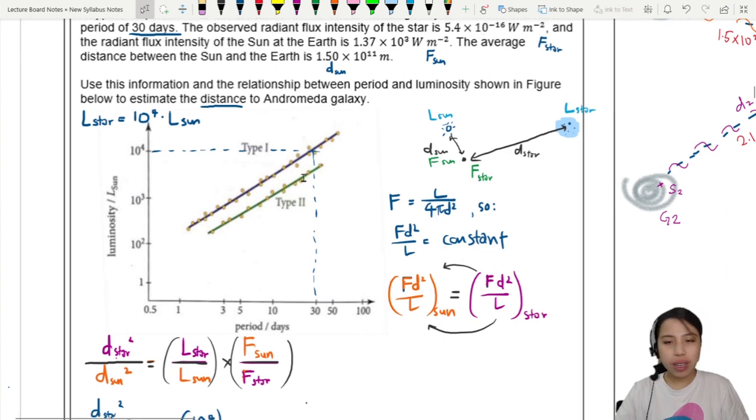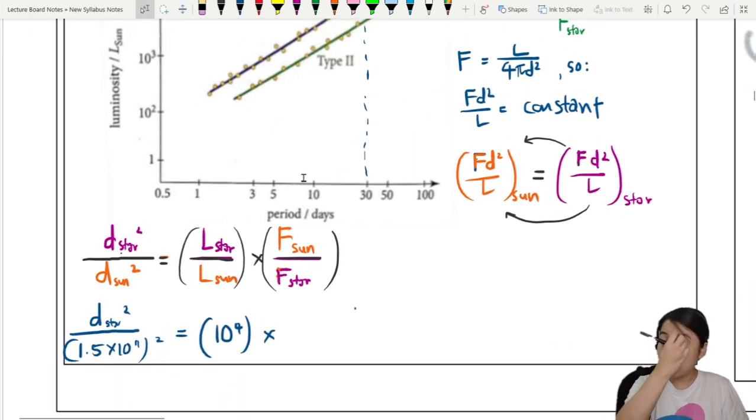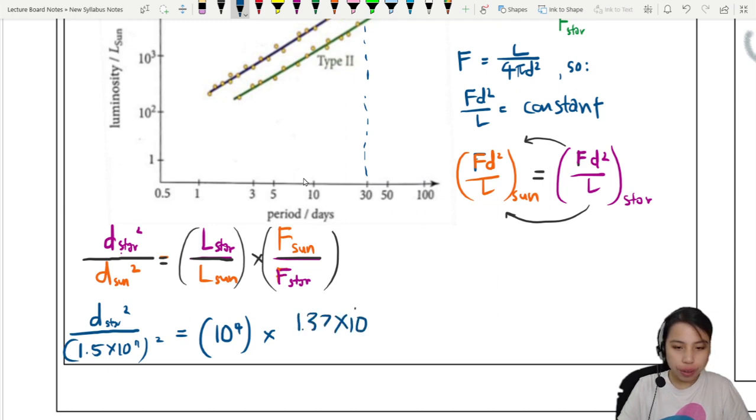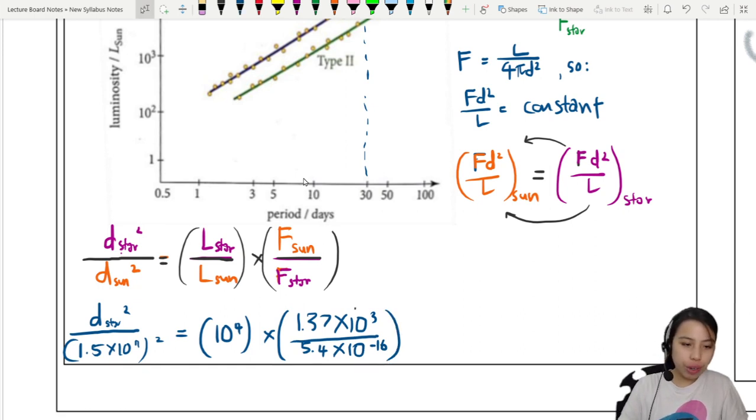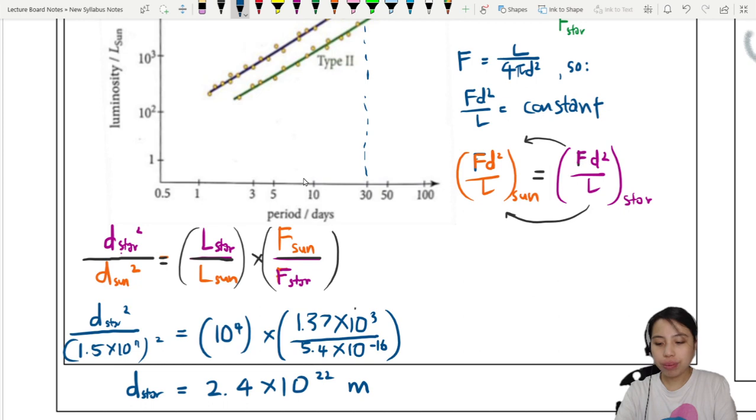F_sun is 1.37×10³, F_star is very very small, very dim light, 10⁻¹⁶. Look at that ratio. If I rearrange and press calculator, I should get a distance to the star of about 2.4×10²² meters. Long distance.